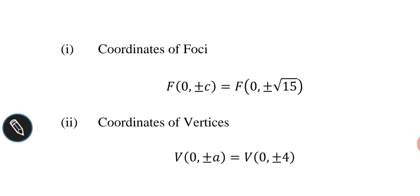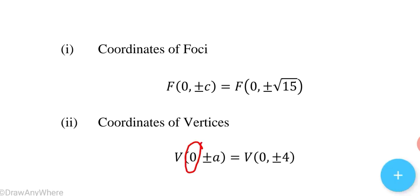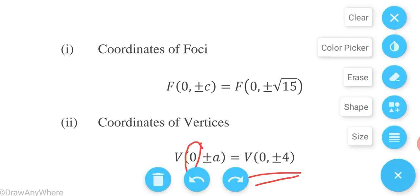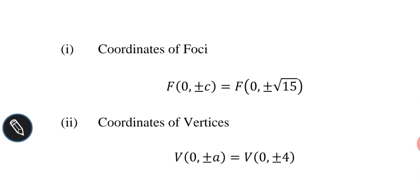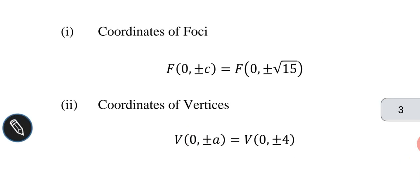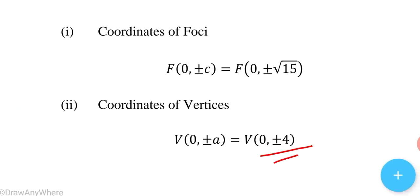The coordinates of the vertices are V(0, ±a). Since the major axis is along the y-axis, x = 0. With a = 4, the vertices are V(0, ±4).